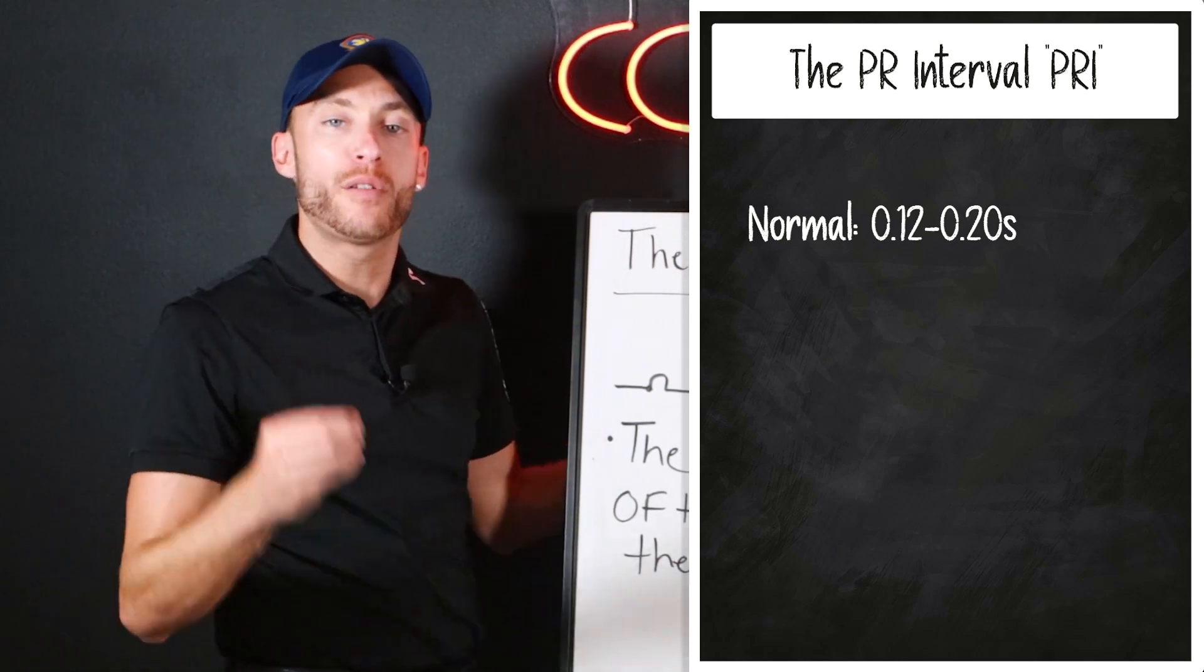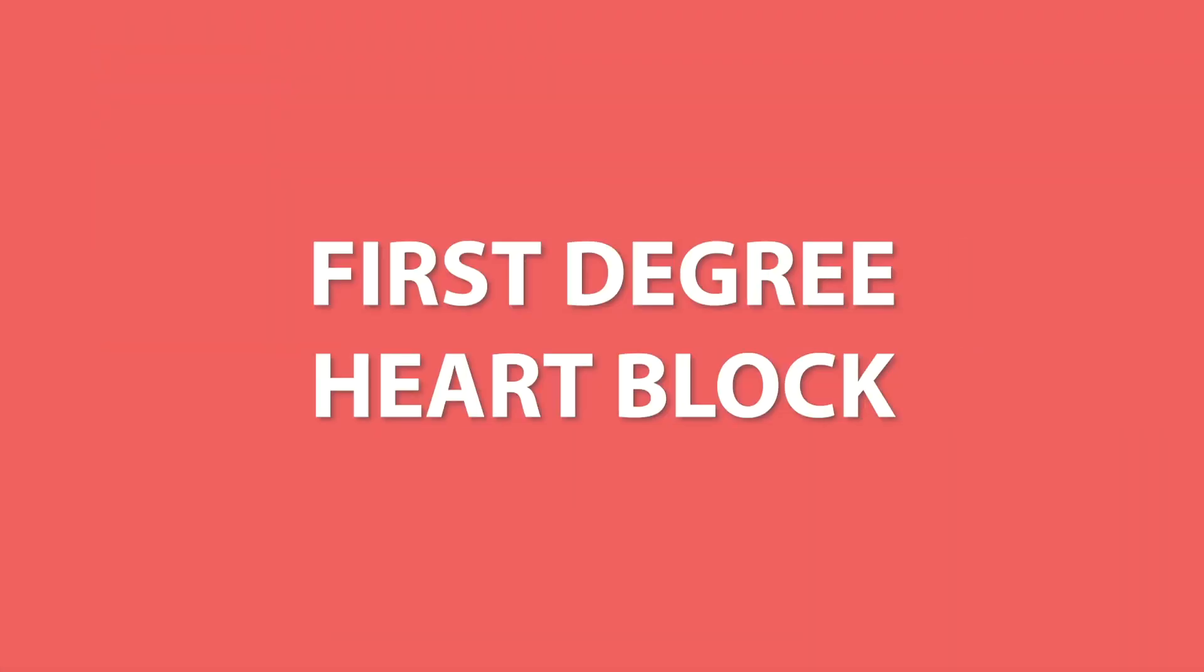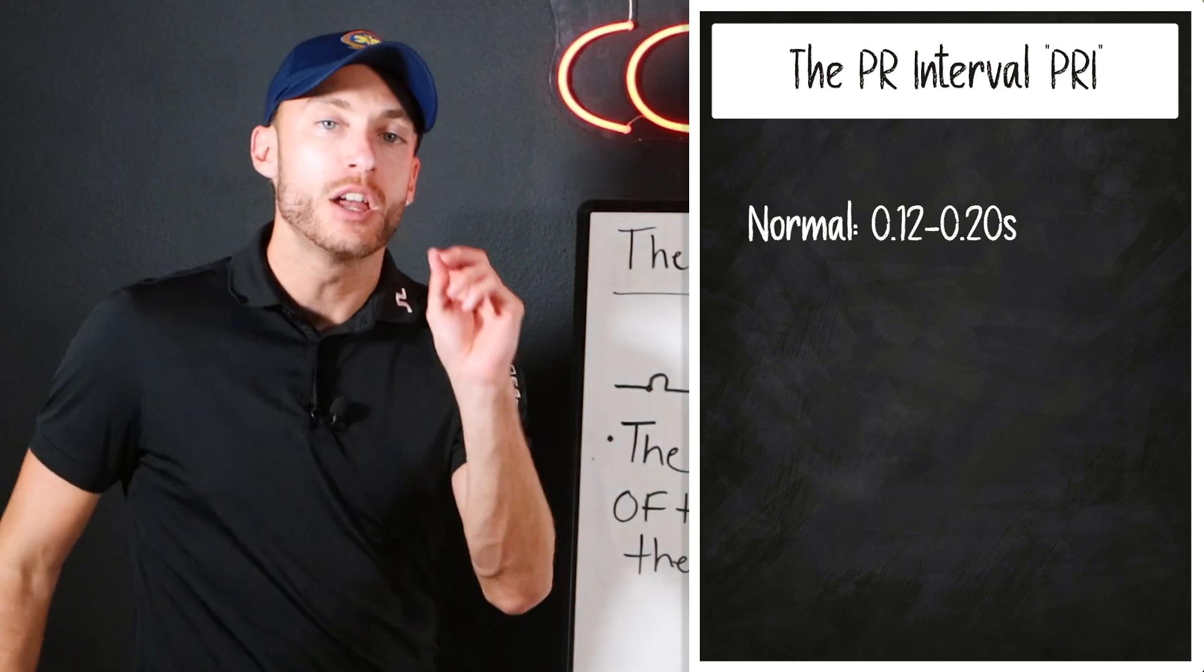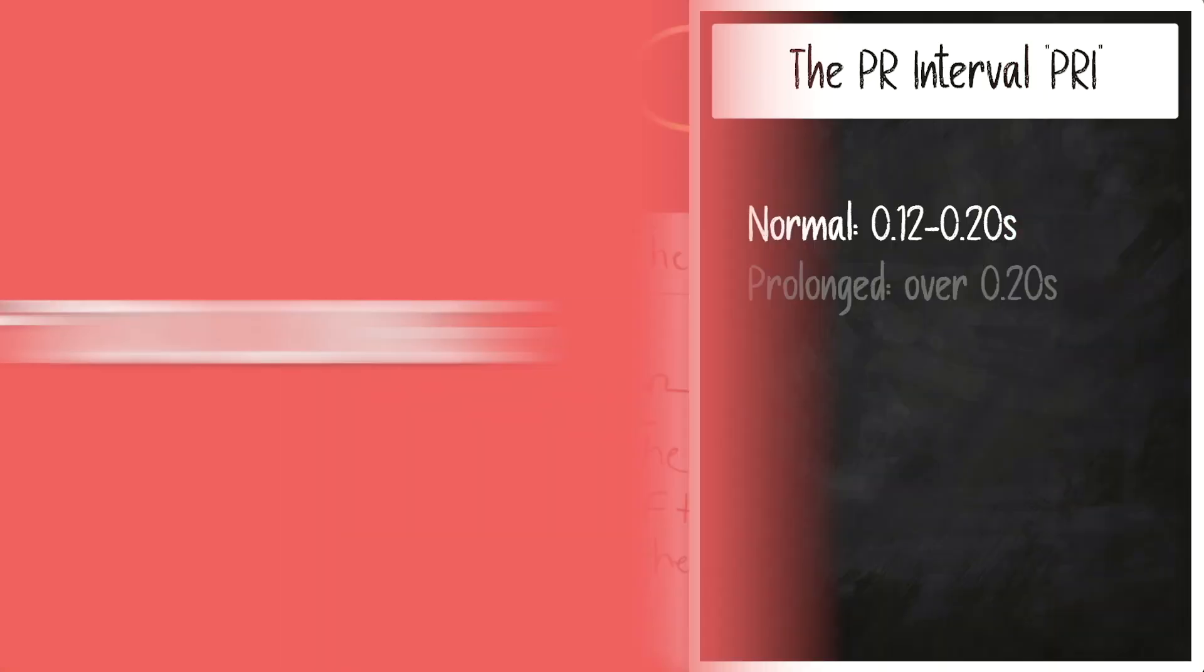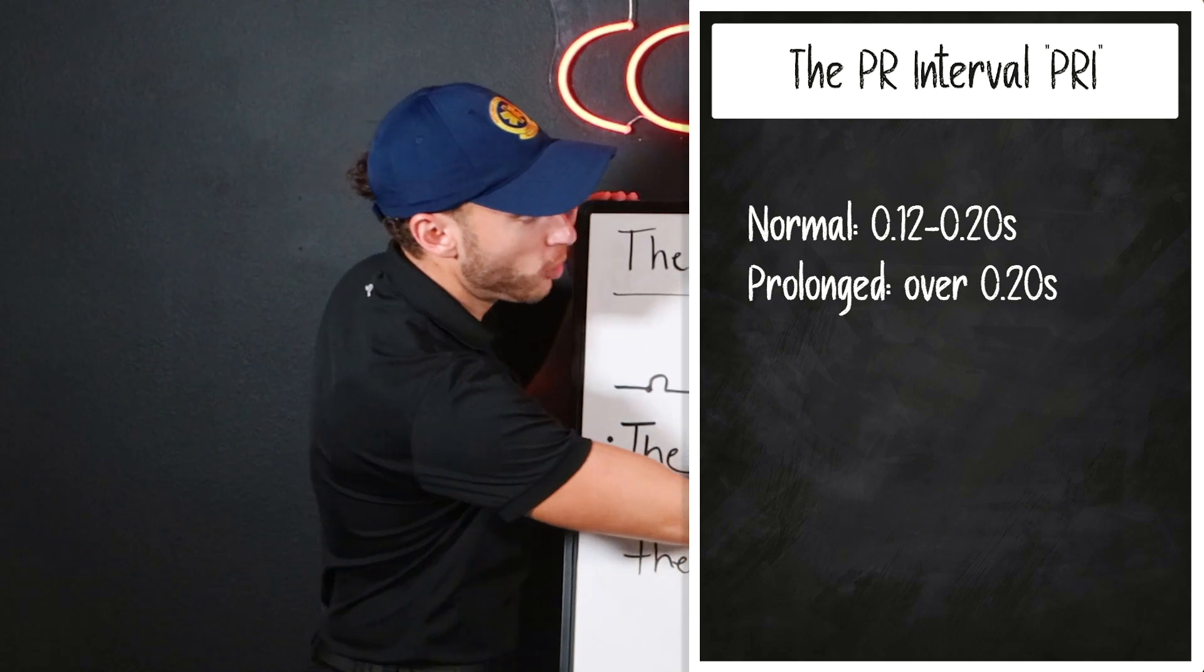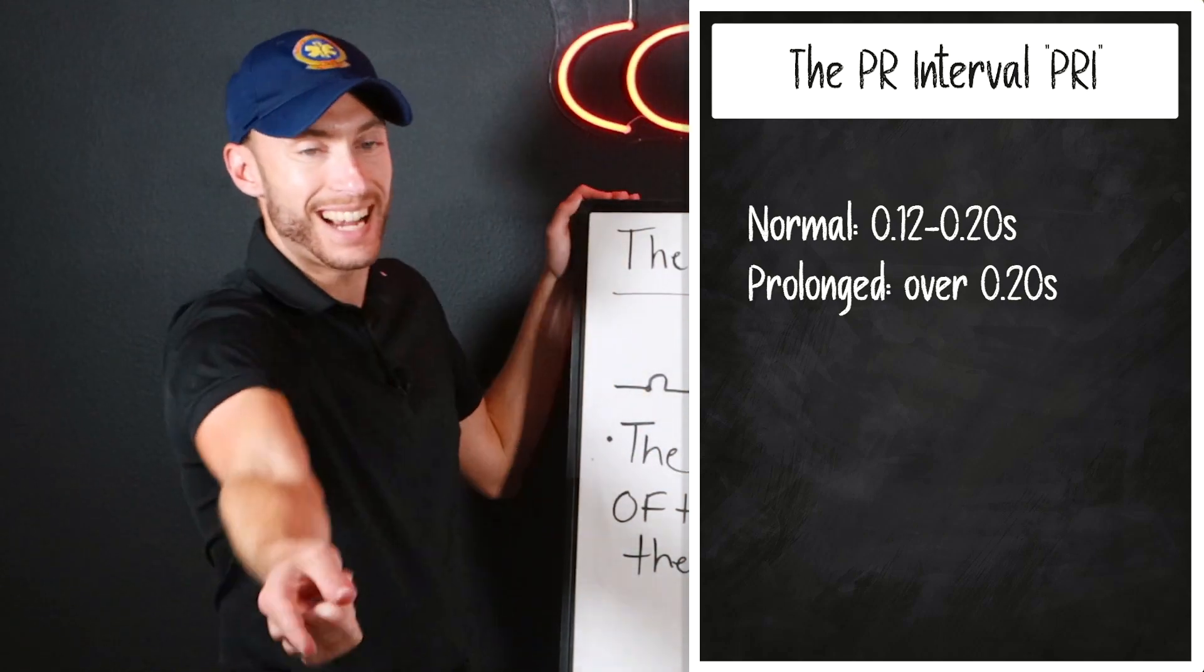Now, if we have a first degree heart block, the PRI is too long. It's a prolonged PRI, over 0.20 seconds.